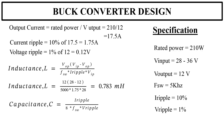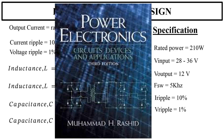The value of capacitance is given by: C equals I_ripple divided by (8 times F_sw times V_ripple). That is C equals 1.75 divided by (8 times 5000 times 0.12), which equals 364 microfarads. This completes the design of the buck converter. The equations were taken from the textbook Power Electronics by Muhammad H. Rashid.